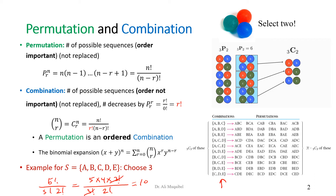If you want the permutations, you drop the division by r factorial. So it becomes 5 factorial divided by 2 factorial. The 3 factorial terms cancel, leaving 5 times 4 times 3, which makes sixty possibilities. Within each combination of three letters, there are 10 orderings — 10 combinations times 6 orderings each — making a total of sixty permutations.